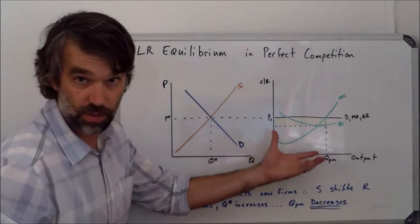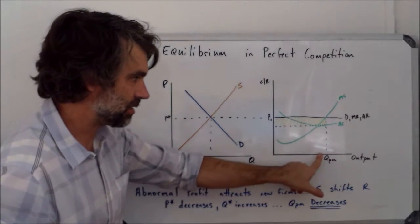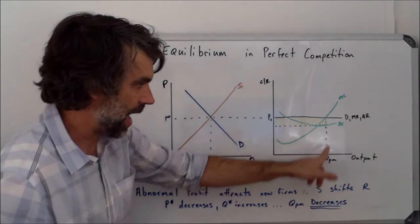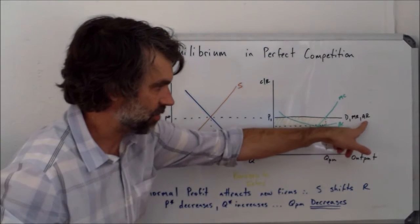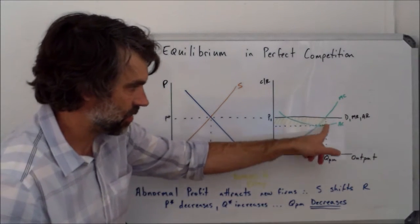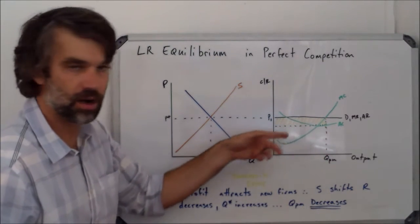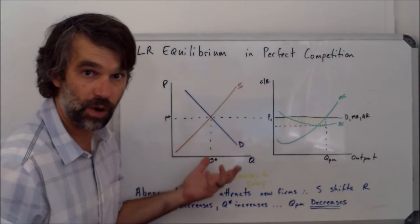We've got, we're assuming that the firm is profit maximizing, so we see that they're producing where MC is equal to MR. And at that position, their average revenue is much higher than their average cost. So this yellow area that I've shown here is an area of abnormal profit.